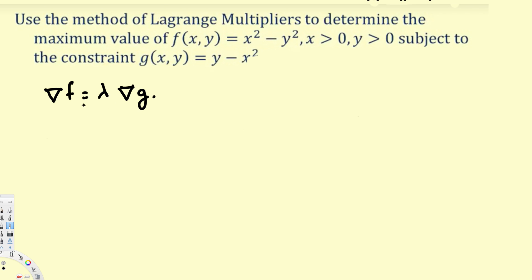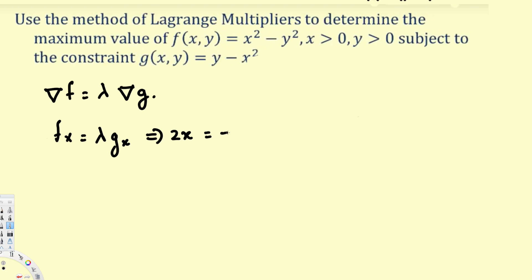We do the same thing for y as well. Now taking the partial derivative of f with respect to x: this gives 2x, and the y term becomes 0 since y is constant. For the partial derivative of g with respect to x, this becomes negative 2x, and the y term is 0. We then multiply this by lambda.